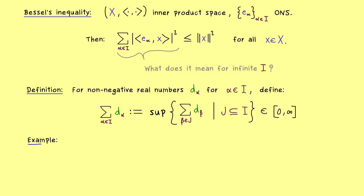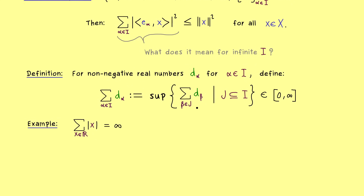For a concrete example, let the index set be the real number line and sum the non-negative numbers given by |x|. A finite subsum can be as large as we want, so the supremum is infinity. However, in Bessel's inequality — even if I equals the real numbers — the inequality tells us that the supremum is always a finite number, bounded by ‖x‖². That is the strength of Bessel's inequality: this uncountable sum is actually not so large.